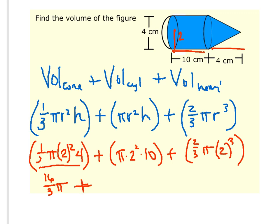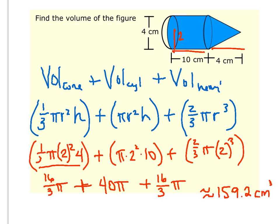Plus 10 times 4 — so that's 40π — plus 2 to the third power is 8, times 2 is 16, so 16/3 times π. Then you can put this into your calculator: 16/3 times π, plus 40 times π, plus another 16/3 times π, should give you about 159.2. And this is volume, so it will be cubic centimeters.